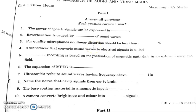Fifth question: a transducer based on the magnetization of magnetic material in an external magnetic field — this is the analog type of recording; we have magnetic recording and analog recording. Sixth question: the expansion of MPEG is Moving Picture Experts Group. Seventh question: ultrasonics refers to sound waves with frequency above 20 kHz, or 20,000 Hz.